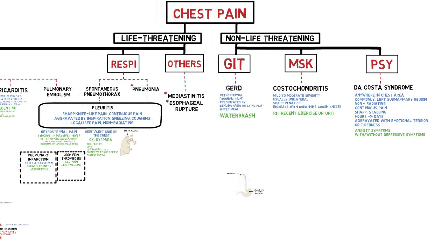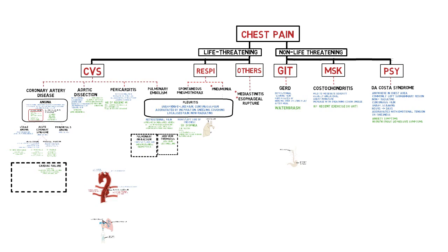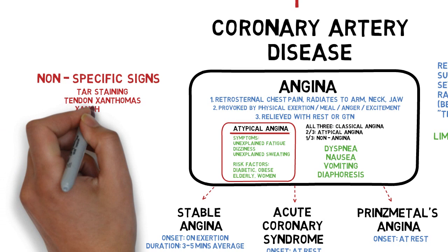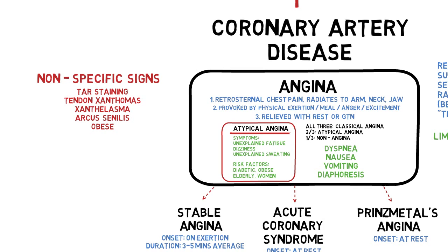Next we will look at suggestive signs for each disease from physical examination. For coronary artery disease, there are no signs specifically pointing to this diagnosis. However, we can look for suggestive signs indicating the patient may have the risk to develop this disease. For example, we have tar staining at the fingers among smokers, tendon xanthoma and xanthelasma for familial hyperlipidemia, arcus cornealis also suggesting hyperlipidemia, and obesity.